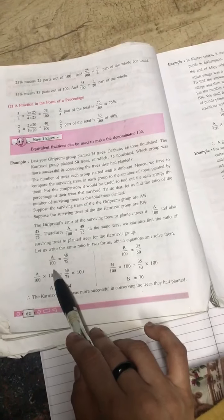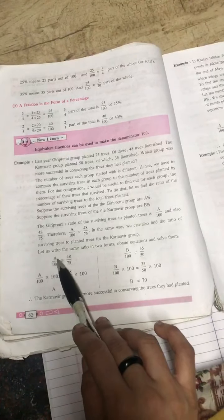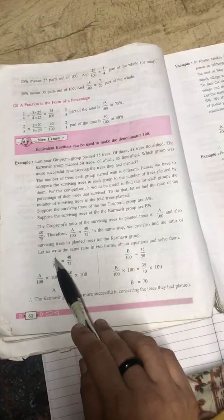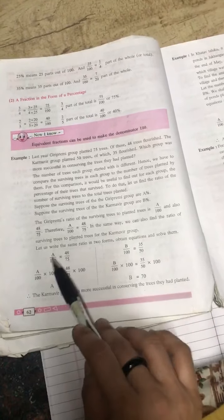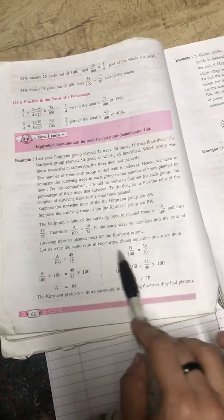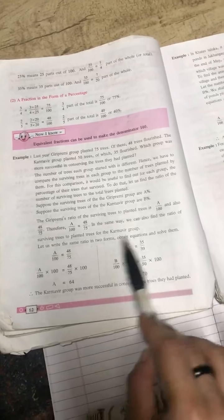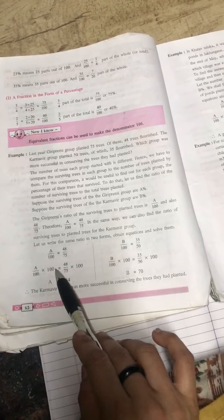Karamvir is b. Now let us write the same ratio in two forms, obtained equation and solve them. a upon 100, because we don't know this is the surviving tree, so we don't know surviving, so we write surviving is a, and this is the flourished and this is the planted. So we made the ratio for Giri Preemi and this is the ratio for Karamvir.